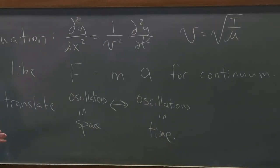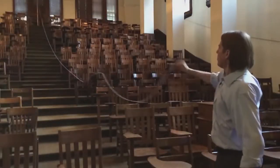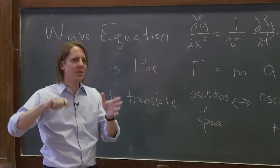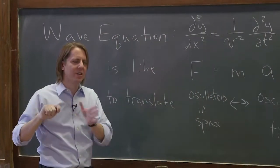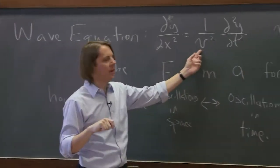We'll be doing this in demos later. But if you imagine you're holding one end of the string and you shake it in time, what happens? It makes a wave that propagates in space. And what sets the relationship between the frequency at which I shake it and the frequency at which it spatially oscillates? The velocity.